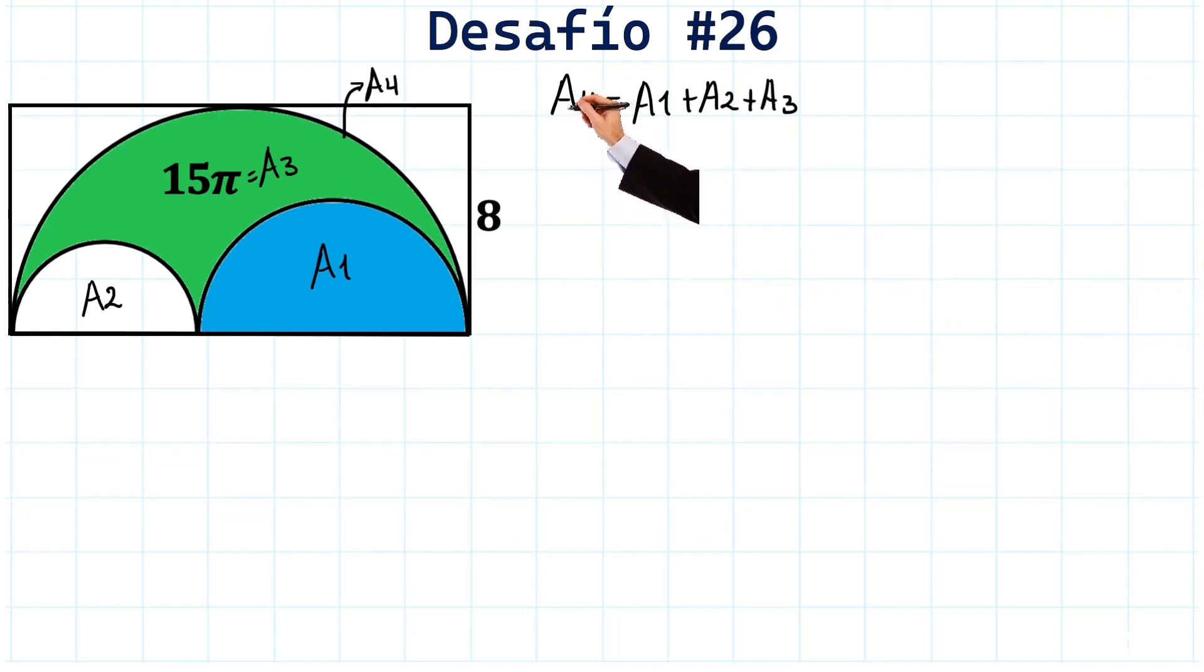So what happens here? We have that area 4 we can find because area 4 is the area of the entire semicircle. And we only need its radius. Look, π times the radius squared over 2. We are talking about a semicircle.